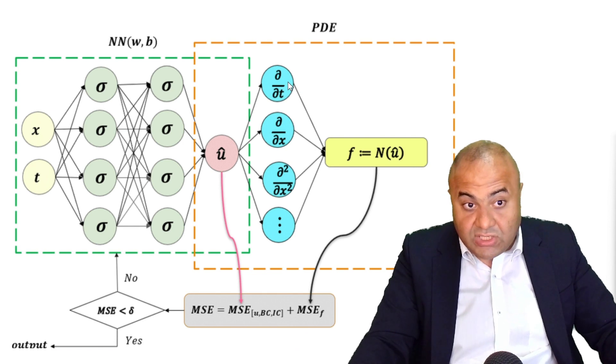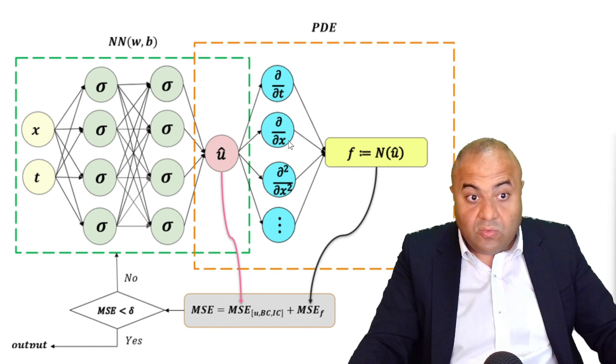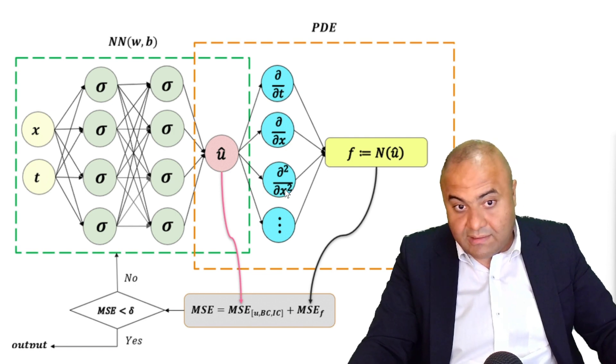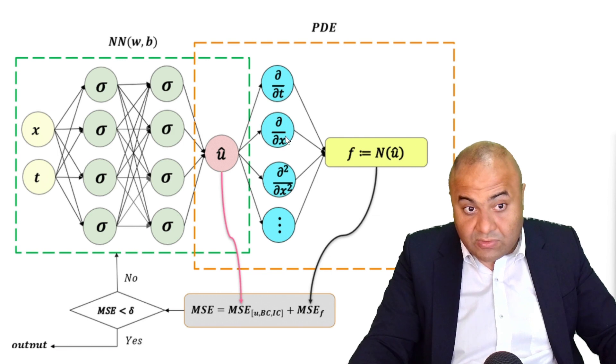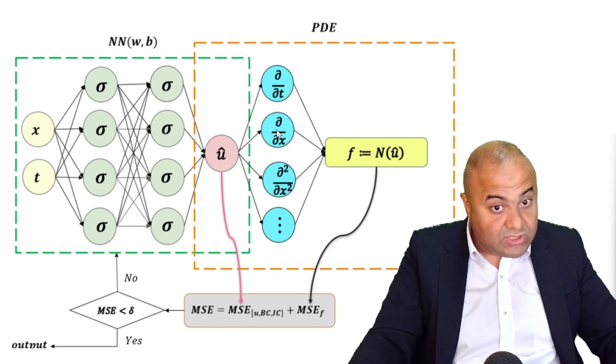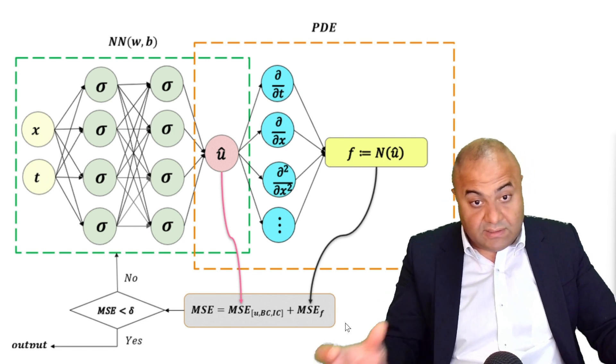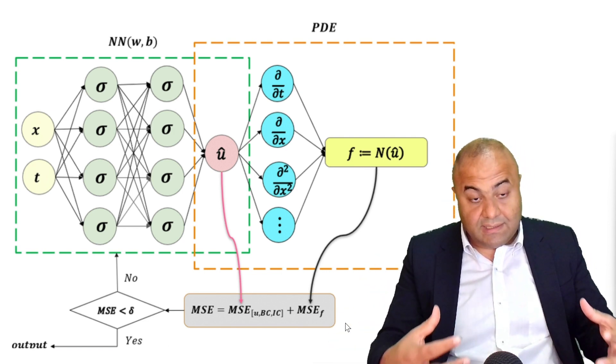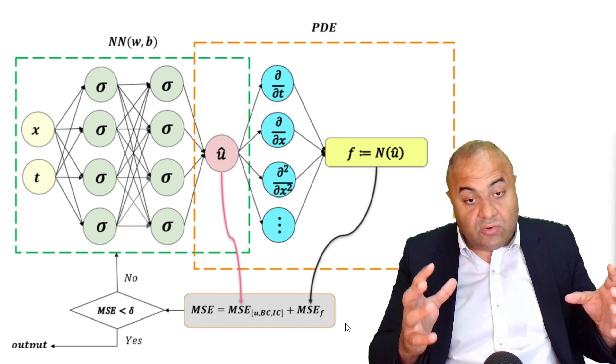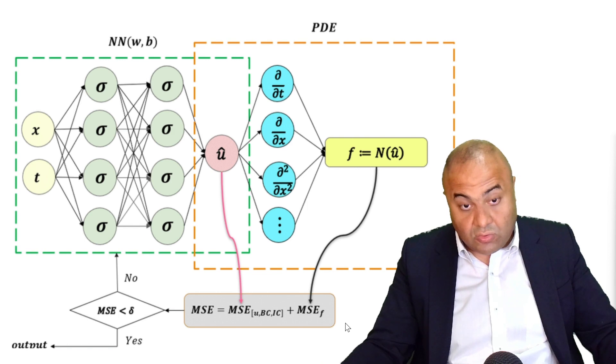which is the derivative of u with time and the second derivative of u with space x. In the heat equation, we don't have the first derivative of u with x. Once we have these two losses, we will keep updating this neural network in order to reduce as much as possible the total loss. Doing this, we will get the answer that we want,